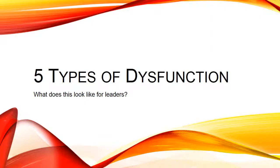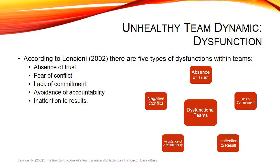There are five types of dysfunctions. We'll take an in-depth view of what the dysfunctions are and give samples of what they look like for us as leaders. According to Lencioni, there are five distinctive dysfunctions: absence of trust, fear of conflict, lack of commitment, avoidance of accountability, and inattention to results.